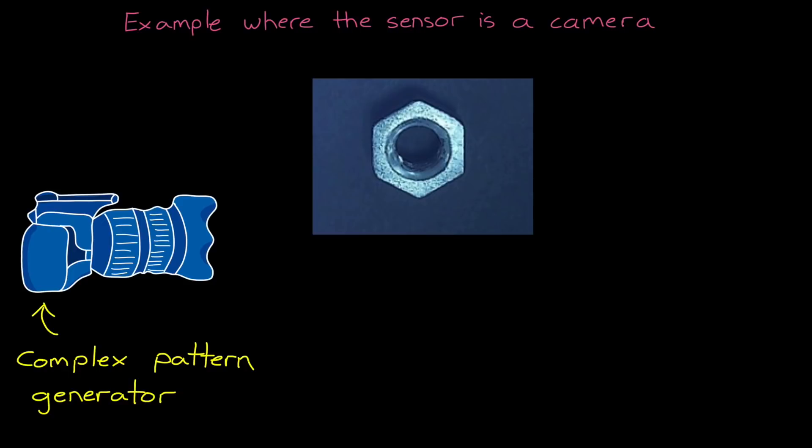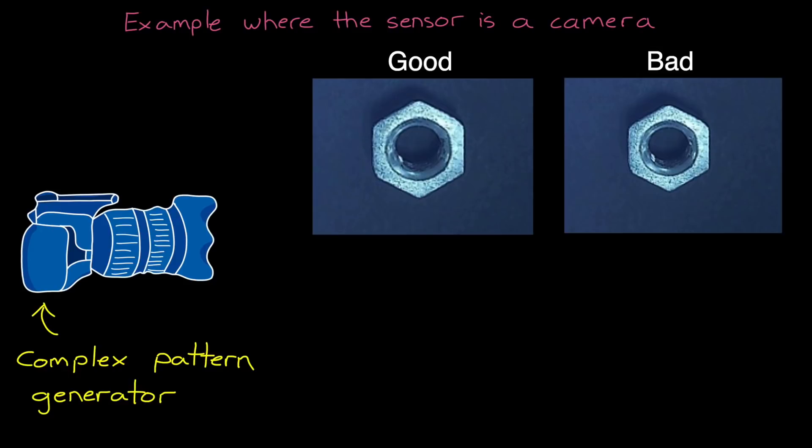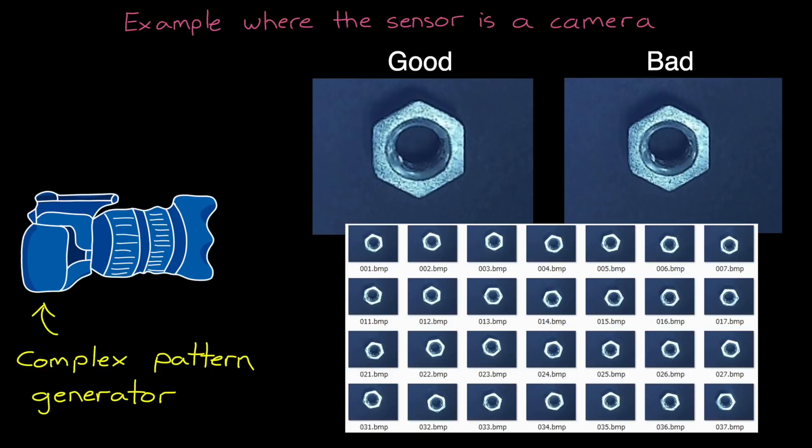And if we thought picking out relevant features of a high-five was difficult, imagine trying to come up with the features that allow you to optically identify a good hex nut versus a defective one. Even if you had access to thousands of images of both, it would be nearly impossible to come up with an algorithm that would distinguish one from the other. At least, it would be without deep learning.